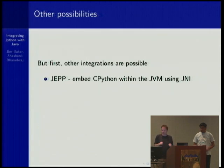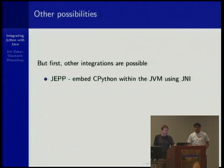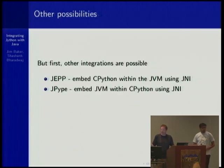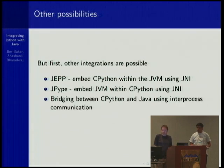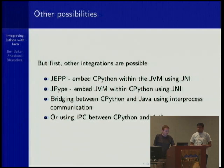In terms of integrating Java and Python, there are other integrations. We have something like Jep, which embeds the CPython runtime within the JVM using JNI. And naturally there's Jpype, which goes the flip side — it embeds the JVM within CPython using JNI. Two different alternatives. You could also bridge between CPython and Java using some form of IPC, which is very common, or you can even use IPC between CPython and Jython.